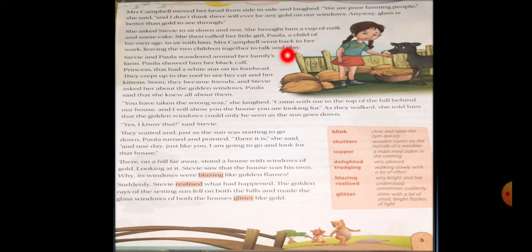Steve and Paula wandered around her family's farm. Paula showed him her black calf Princess that had a white star on its forehead. They crept up to the loft to see her cat and her kittens. Now they both, Steve and Paula, were walking here and there and Paula showed the animals on her farm. There was a black calf, kittens, cat, and other pet animals on the farm.